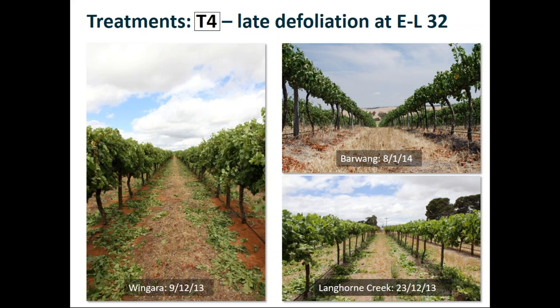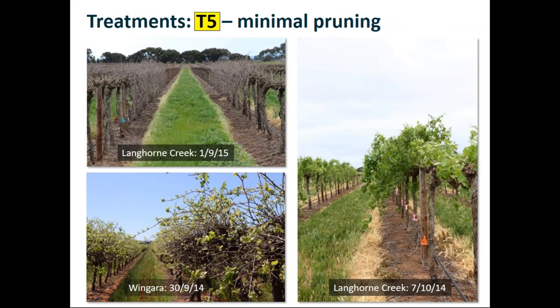The crop removal treatment and late defoliation were both done at EL stage 32, which is just prior to veraison. Finally there was the minimal pruning treatment T5 - at the end of the first 2013-14 season we left the vines unpruned and then simply prior to bud burst trimmed off the very ends of low hanging canes so that they weren't growing right down to the ground. You can see a picture from the South Australian Langhorne Creek site showing the amount of cane left, and below that the Victorian site at bud burst with shoots growing from all of those buds.